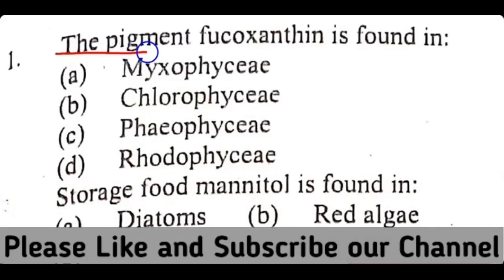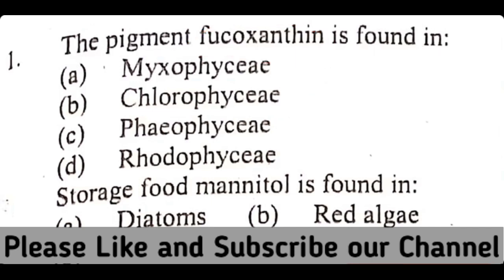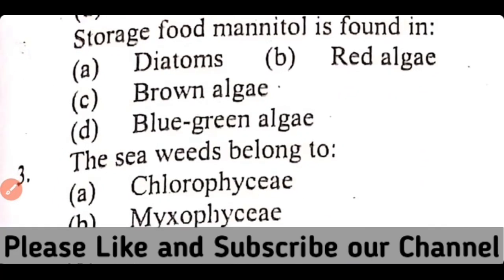Question number 1. The pigment Fucoxanthin is found in: Myxophysia, Chlorophysia, Phyophysia, or Rhodophysia. The correct answer is option C. Phyophysia, or brown algae, contain the pigment Fucoxanthin.